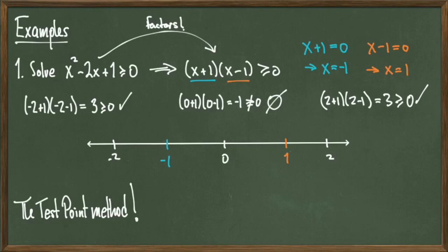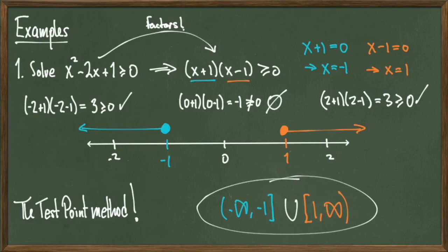The roots -1 and +1 are the only numbers that give 0. By using these test points, I know which parts of the number line give positive numbers. Converting to interval notation, the solution is (-∞, -1] ∪ [1, ∞). I'm including -1 and +1 because the problem asks for where the polynomial is greater than or equal to 0.